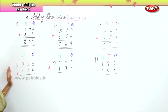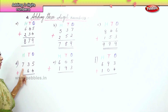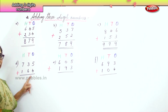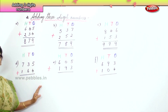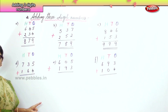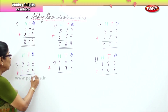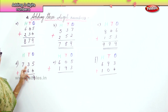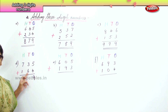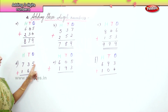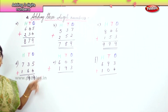Now we go to another sum: seven hundred and thirty-five plus one hundred and sixty-four. First we look at the ones. In the ones place you have five ones plus four ones. What is five plus four? Nine ones. In the tens place, you have three tens and six tens. What is three plus six? Nine — also nine.